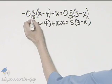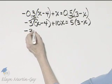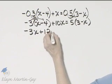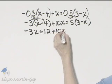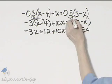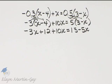Now let's continue. That's negative 3x plus 12 plus 10x is equal to 15 minus 5x. Again, using the distributive property.